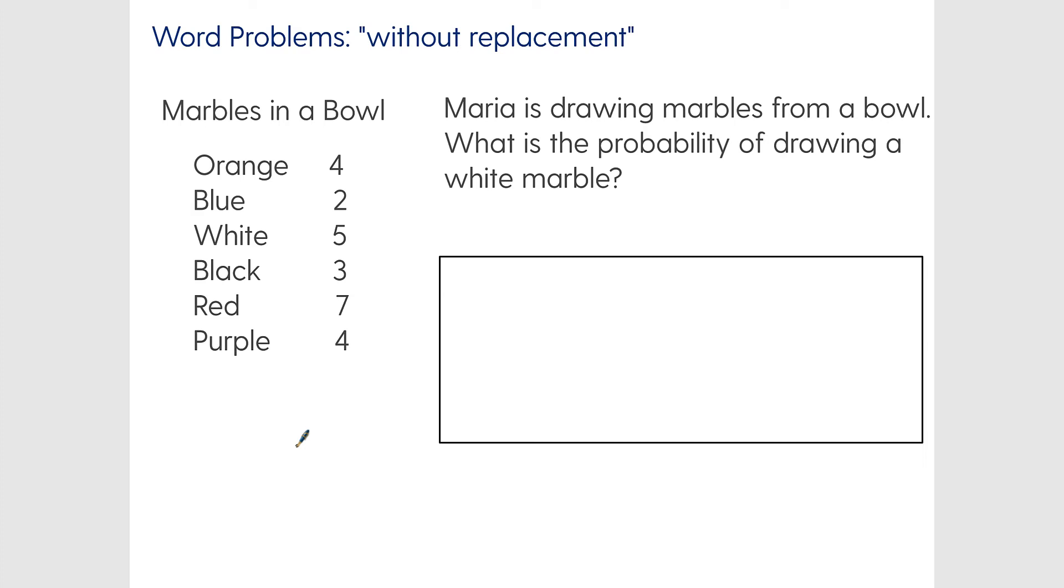Let's dive into a problem here. Here is a word problem—this is what I call a without replacement problem. Our situation is we have marbles in a bowl: orange, blue, white, black, red, and purple. The question is Maria is drawing marbles from a bowl. What is the probability of drawing a white marble? If we look at how we're going to set this up, we want favorable over total—the favorable outcomes over the total outcomes.